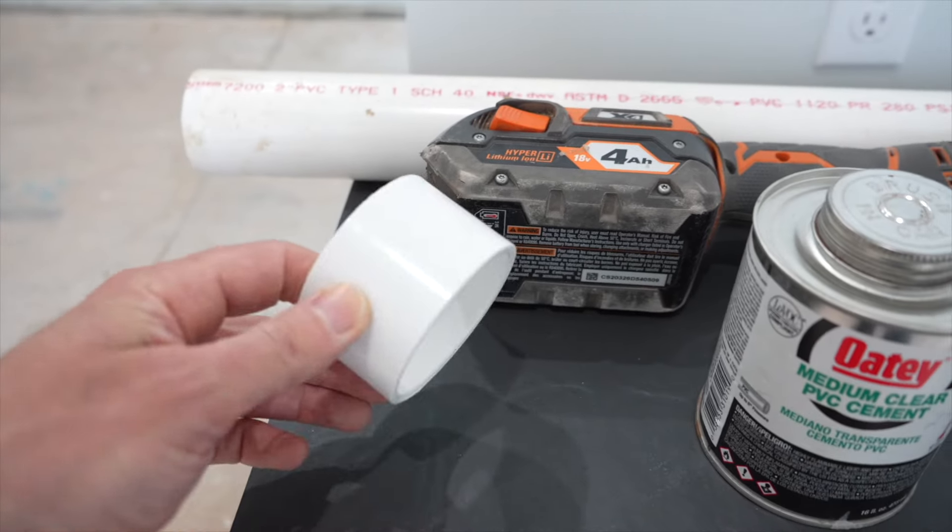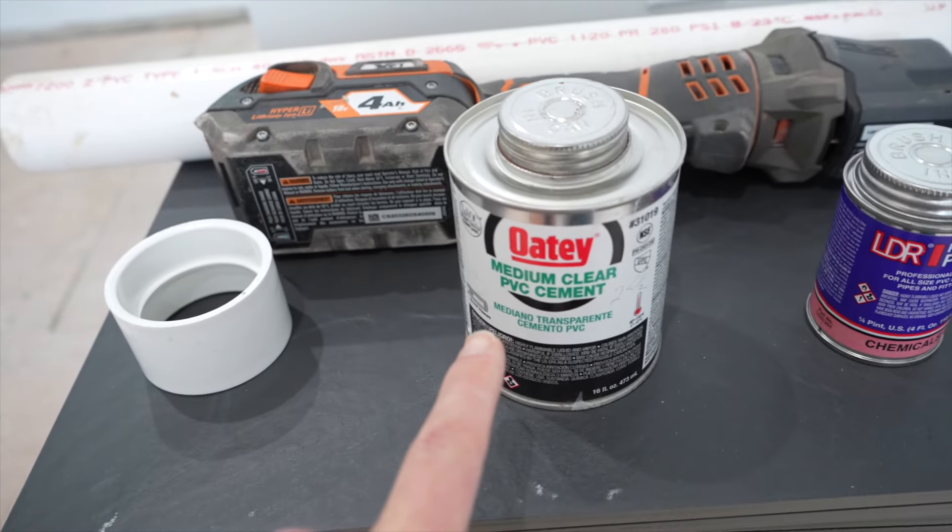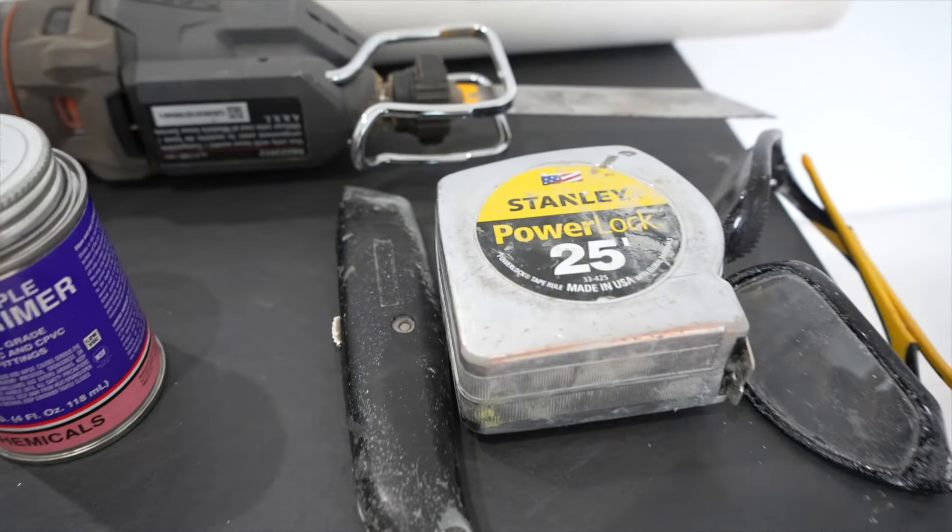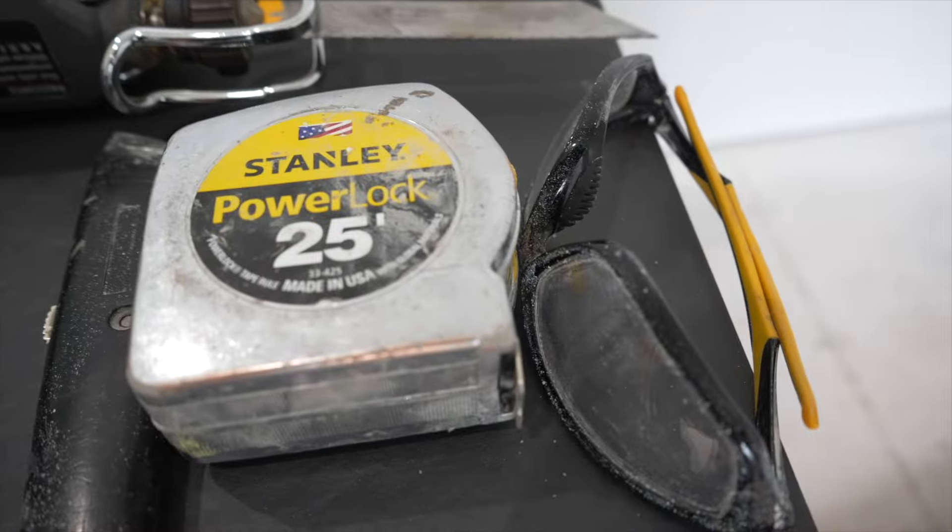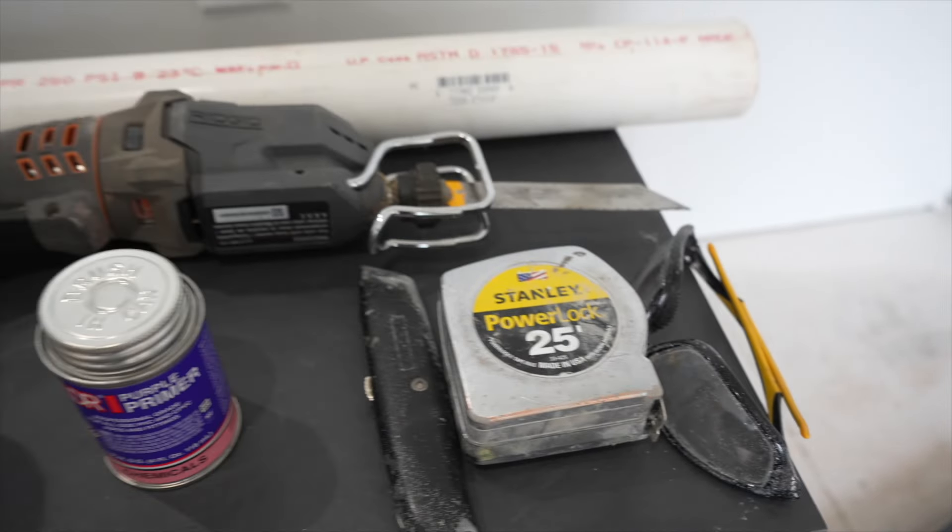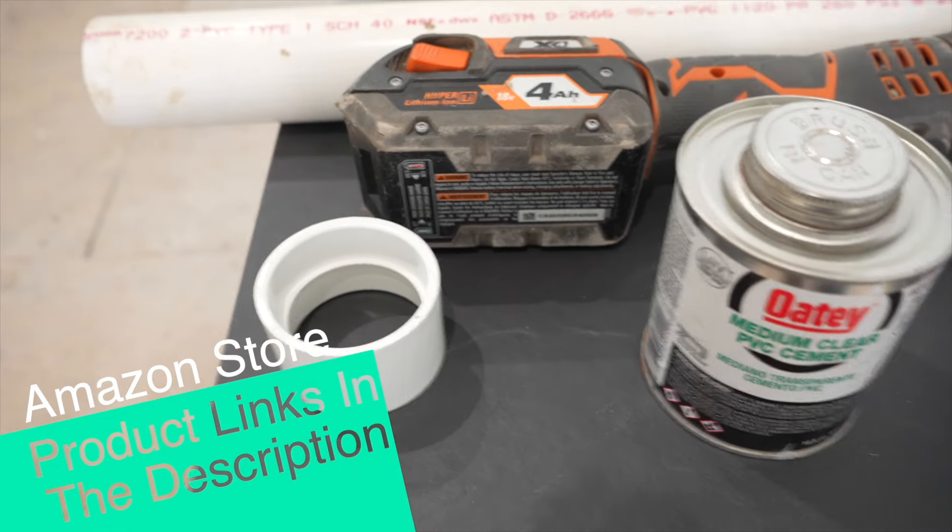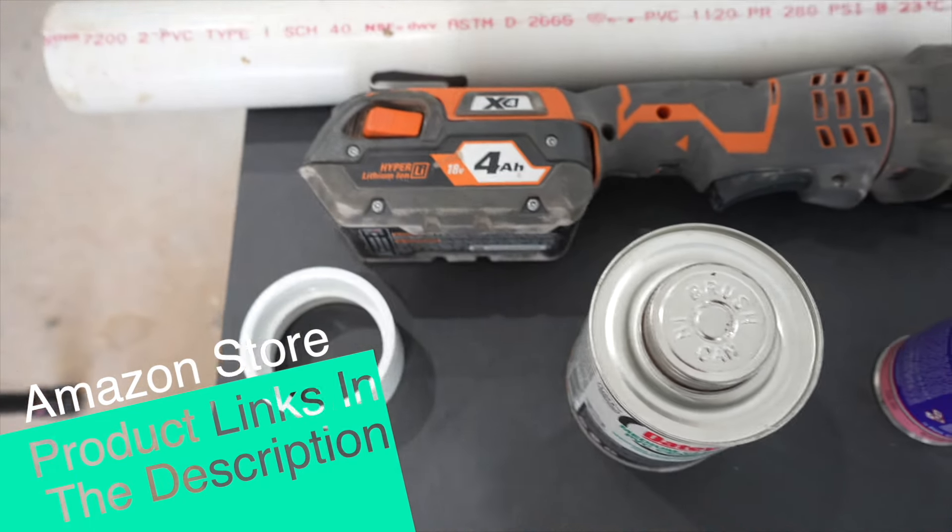A two inch coupling, PVC cement and PVC primer, a utility knife, a tape measure, and safety glasses. You can find these items in my Amazon store. There's a link in the description below. If you make a purchase I earn a small commission but it's no extra cost to you to help support the channel.